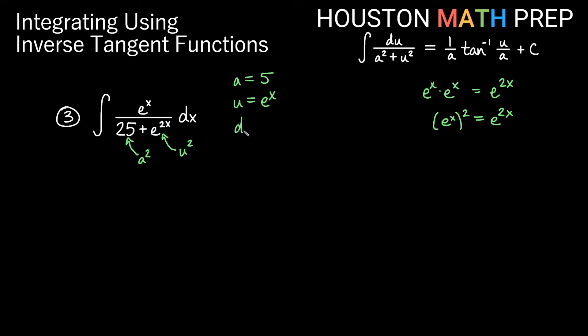Okay, now if u is e to the x, we need to figure out du. The derivative of this is just e to the x. So du is e to the x dx. And that's nice, because we have exactly e to the x dx there. So that whole thing is just du. No constant multiple this time. Let's go ahead and set this up.